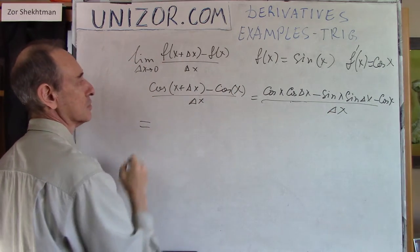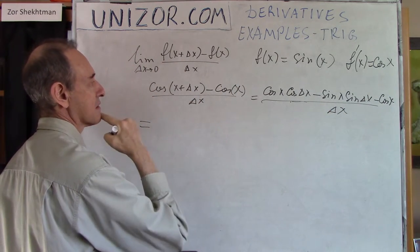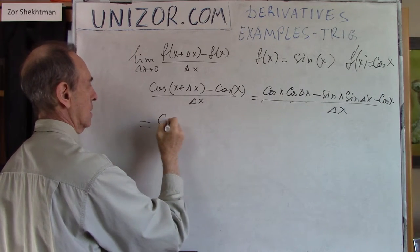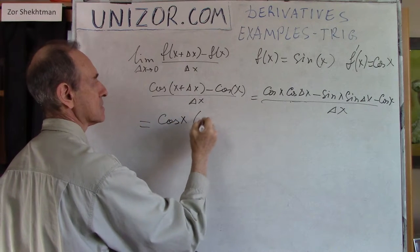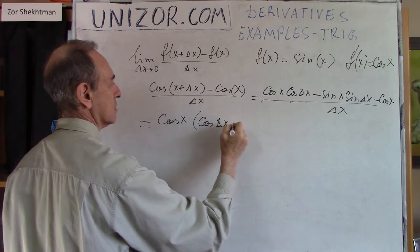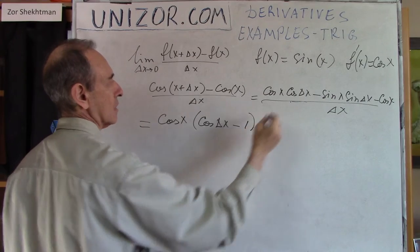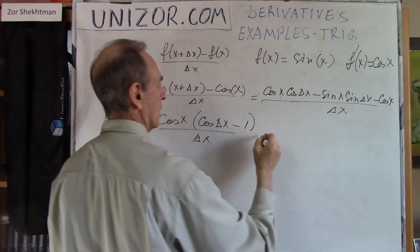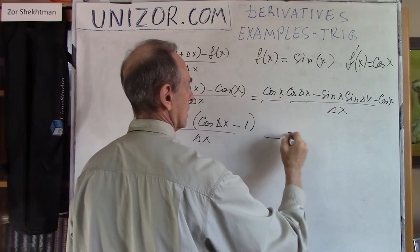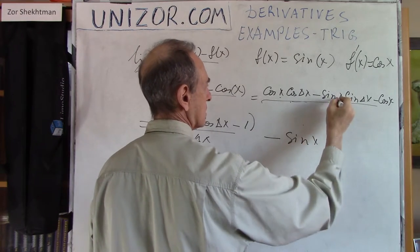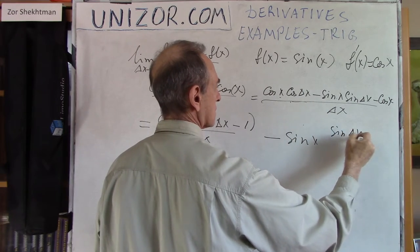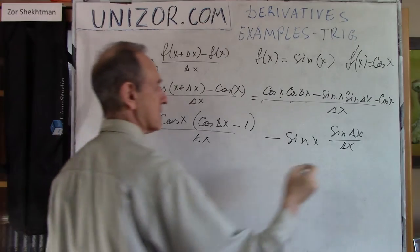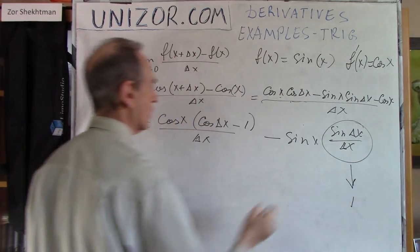So we have cosine x times cosine delta x minus one divided by delta x, minus sine x times sine delta x divided by delta x. Now, as delta x goes to zero, this goes to one, as we know.